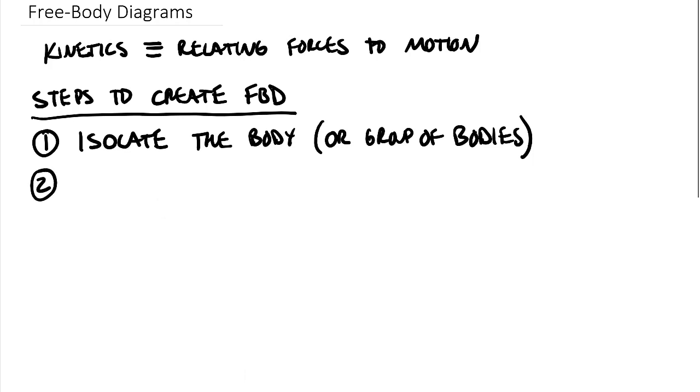So step two is that every free body diagram needs an axis so we need to establish an axis system. Maybe I should put even simpler terms, instead of establish just put draw, draw an axis system. Now many problems maybe 85, 90% of problems we'll use a horizontal x and a vertical y. As we get into dynamics later we'll use different axis systems, tangent normal and polar and some different things, but for right now typically Cartesian x and y.